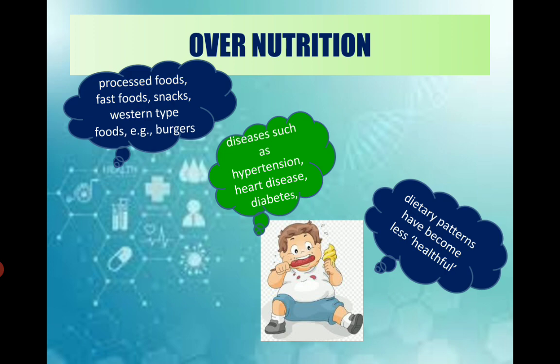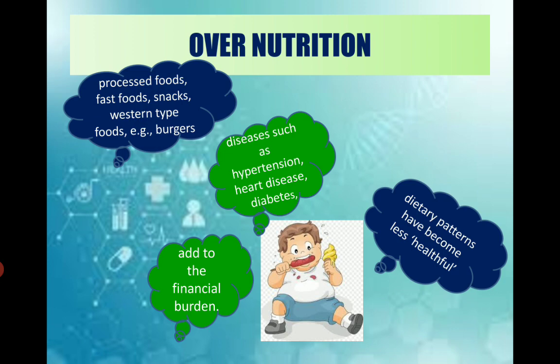Next is diseases. What does overnutrition result in? Diseases like hypertension, heart diseases, blood pressure, diabetes, thyroid - all these are the issues which are related with our dietary patterns. Next, we have to bear the financial burden. If we are not well, we cannot go to work and we are losing on our earnings. And with this, we will be spending on our treatment also, adding to the financial burden.